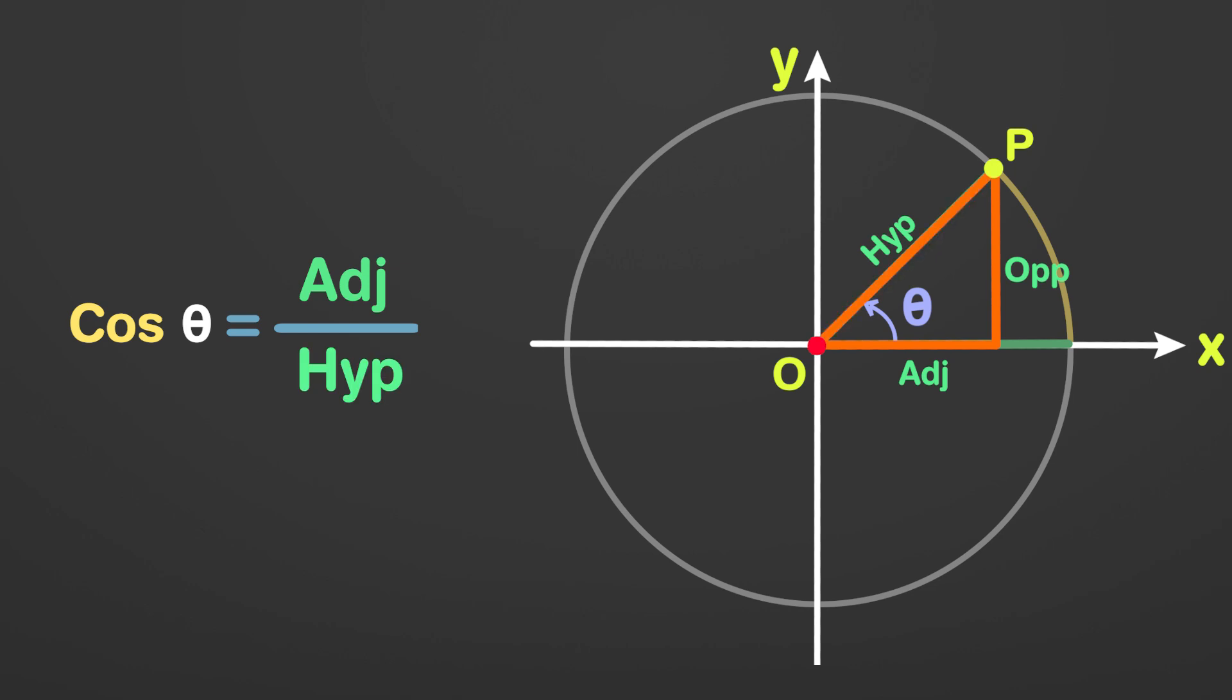Cos theta is the ratio of length adjacent side to it to the hypotenuse OP. Since hypotenuse is the radius of the circle itself, and the circle is of unit radius, hypotenuse becomes equal to 1, and cos theta becomes equal to the length of the adjacent side. The angle of inclination, theta, can be rewritten as cos inverse length of adjacent side. If I replace theta by y and length of adjacent side by x, the function is expressed as y equals cos inverse x.